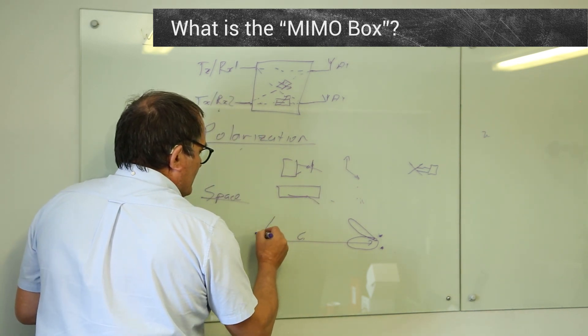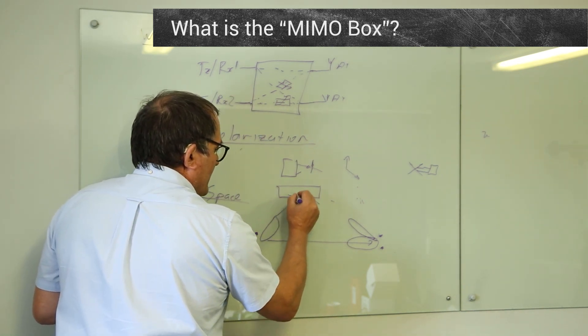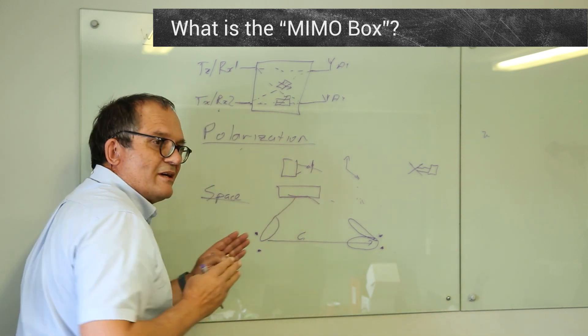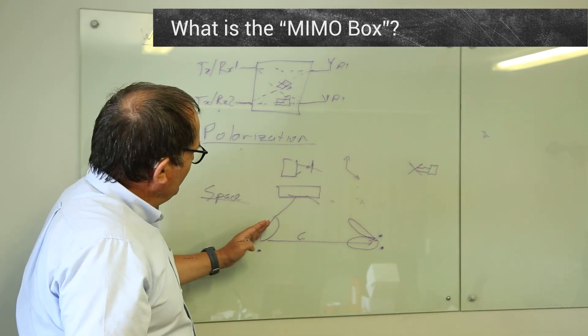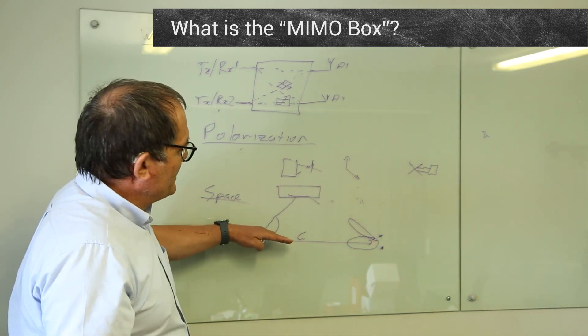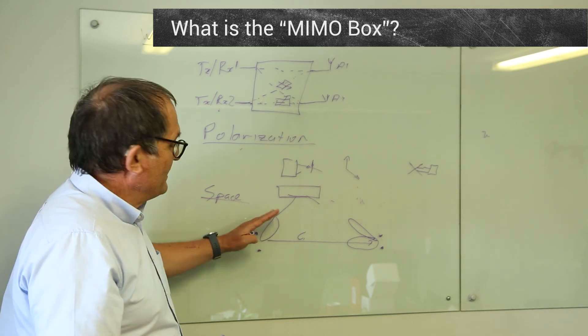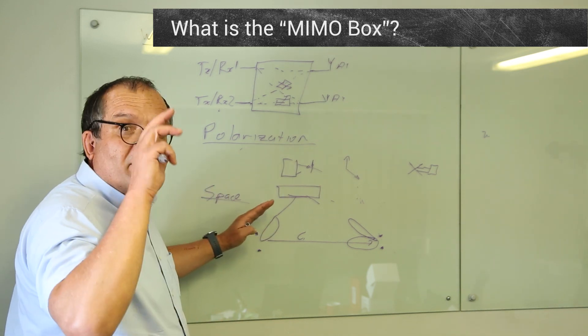This guy will do the same. Now they can bounce the signal off this side, and this beam here will not see much of this one here. As long as that 'not much' is good enough, they can get two sets of data.